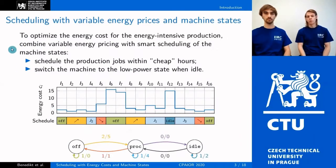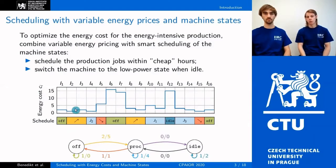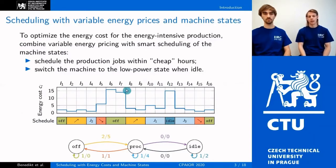In this work, we consider these two trends together. The goal is to schedule jobs on the machine such that power-demanding operations are scheduled within cheap intervals and the total energy consumption cost incurred by the machine state is minimized. Here you can see an optimal schedule for a simple instance with 3 jobs and 16 intervals, where during the expensive intervals the machine is either off or idle.